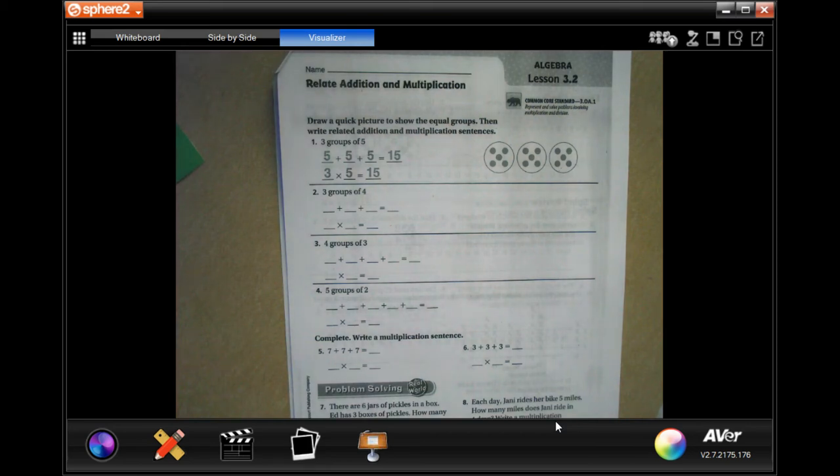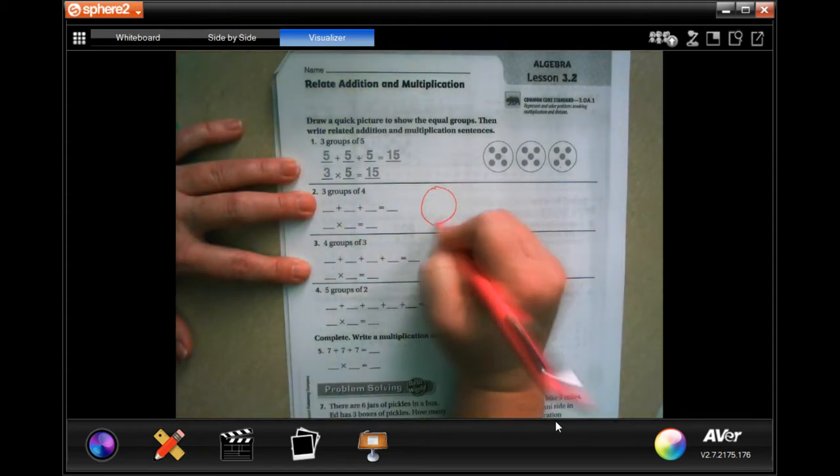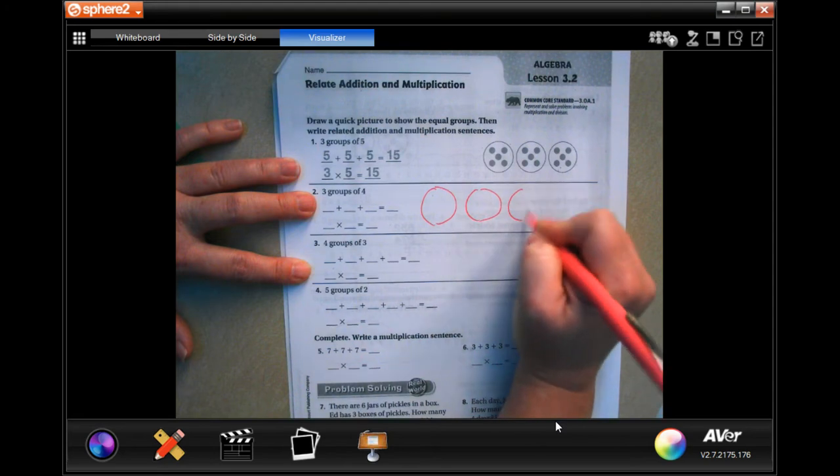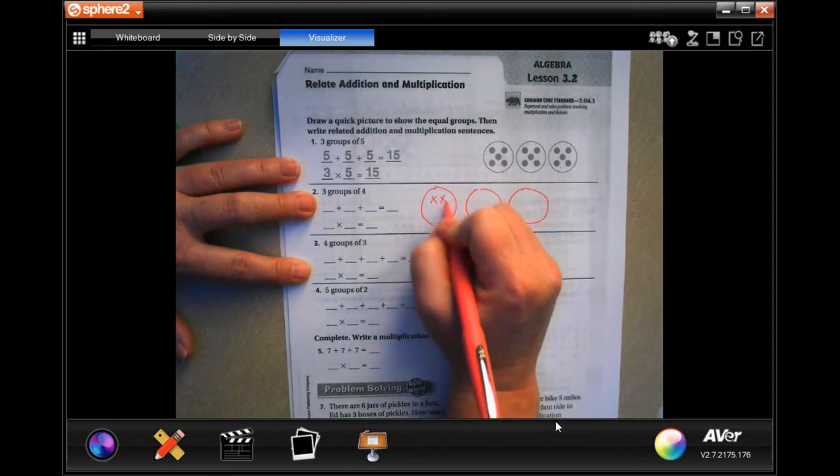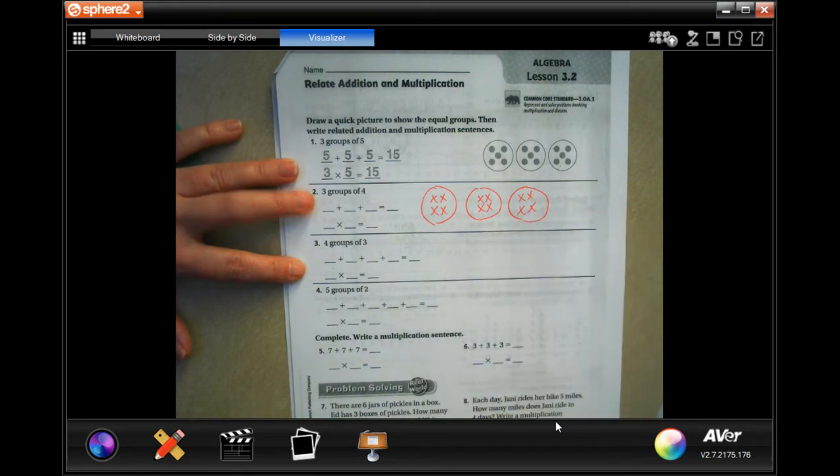Hey guys, welcome to third grade, chapter three, lesson two. We're going to go ahead and get started with number two. It wants three groups of four. So I'm going to do three groups, and we're going to put four x in each one. There we go.